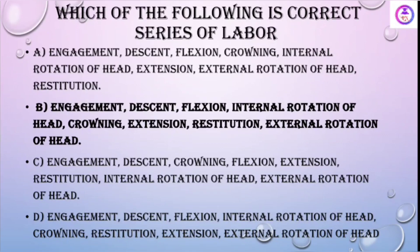Then comes crowning. Crowning is when the head at the perineum is visible and with every contraction it is not going back — it stays there. That is crowning. Extension means delivery of the head. Restitution means the head rests there, and then the head takes an external rotation followed by delivery of the shoulders. This is the correct sequence of labour.